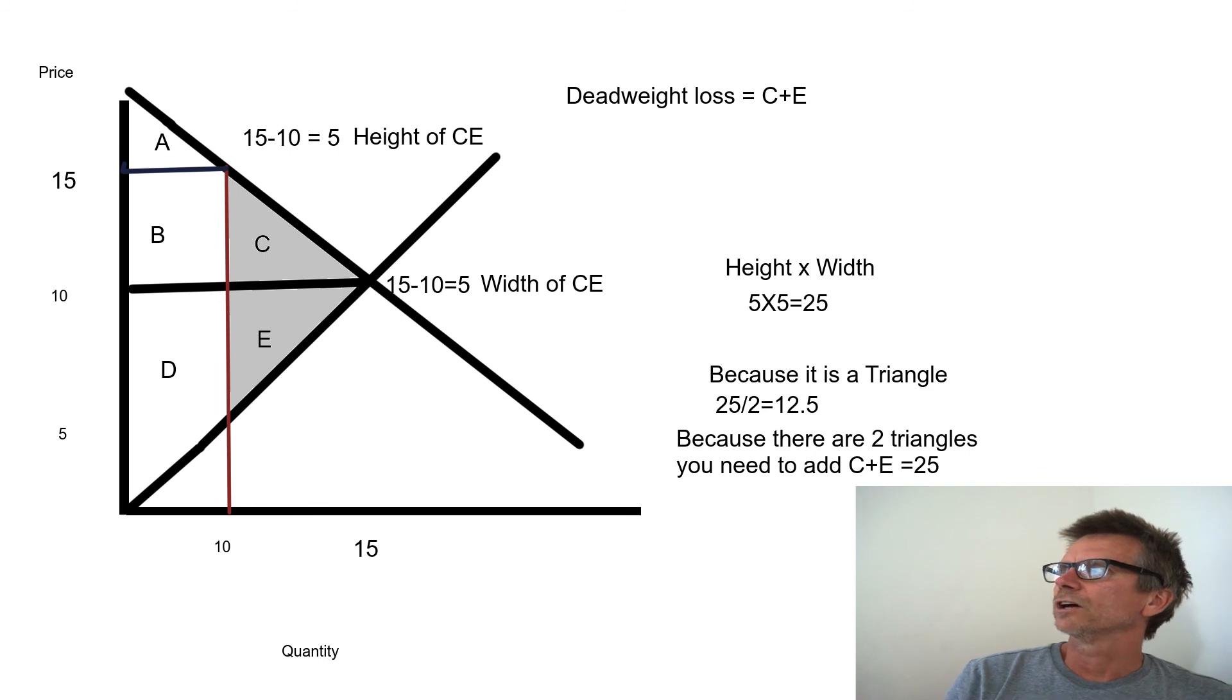Now, in a deadweight loss calculation, you have two triangles. So it's height times width divided by 2. And then you would simply add triangle C plus E. And you'll get the deadweight loss. In this case, it's 25.